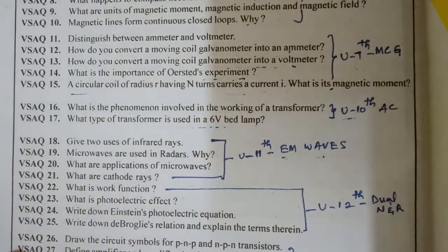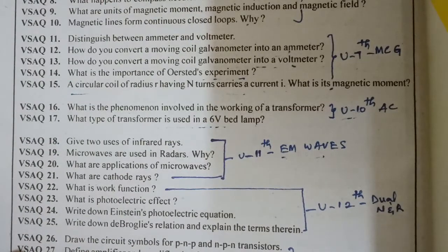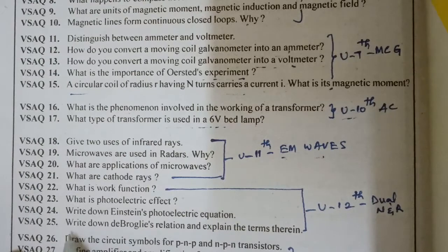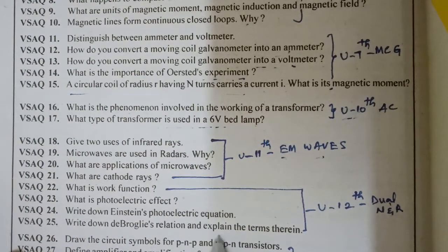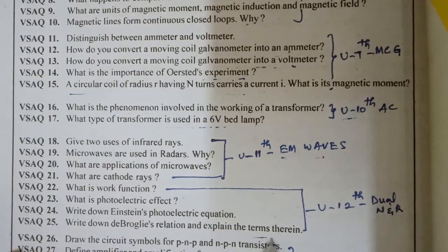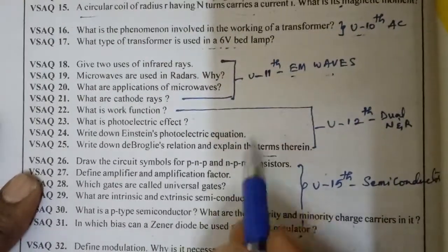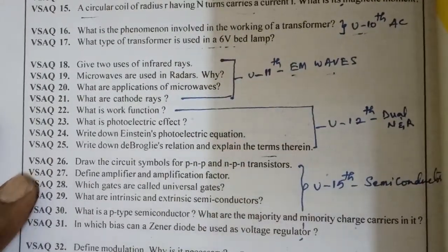Twenty-second question: what is the work function? Twenty-third: what is the photoelectric effect? Twenty-fourth: write down Einstein's photoelectric equation and explain the terms therein. These questions belong to the dual nature of radiation and matter chapter.